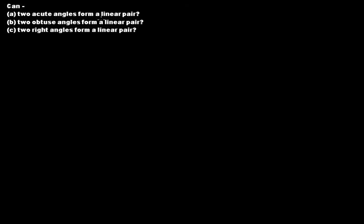Can two acute angles form a linear pair? We know that acute angles lie between 0 and 90 degrees. Even if both acute angles are as large as 89 degrees, 89 plus 89 makes only 178 degrees. For a linear pair, the sum must equal 180 degrees. So even if two acute angles are adjacent, their sum can never equal 180 degrees — therefore they cannot form a linear pair.